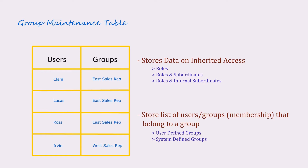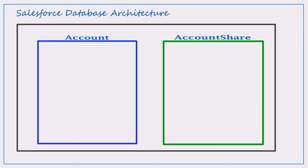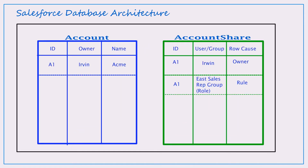We've added some key points related to the group maintenance table for your reading. Now let's see how Salesforce stores the account object. The entire setup has the account table, account share table, and the group maintenance table. Focusing on the account and account share table, we see a record for our scenario.